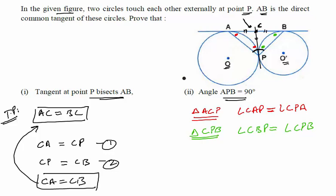Now consider the larger triangle ABP, which is a combination of these two triangles. In this triangle, let us write the angle sum property. Angle PAB plus angle PBA plus angle APB equals 180 degrees.